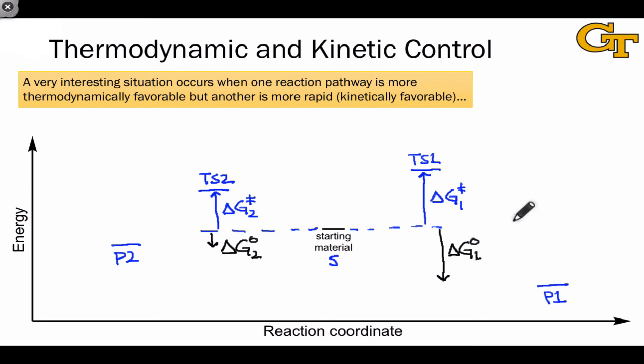The pathway leading from S to P1 is favored thermodynamically because P1 is lower in energy than P2—P1 is more stable. But this pathway from S to P1 is slower than the pathway from S to P2. Put another way, the pathway leading from S to P2 is favored kinetically. It just occurs more rapidly.